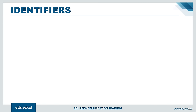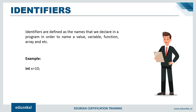Identifiers are defined as names we declare in a program to name a value, variable, function, array, etc. They are the names given to variables, functions, and arrays used in a program — similar to naming a person. If you want to access a particular memory location, value, or function, you refer to it by its identifier name.